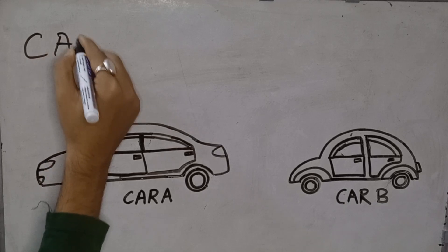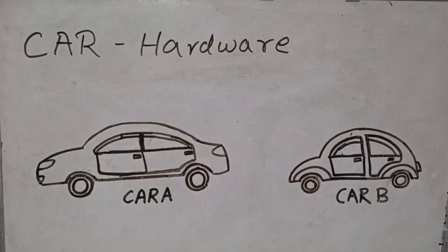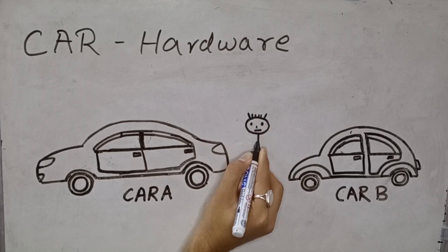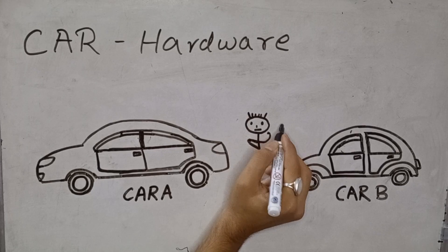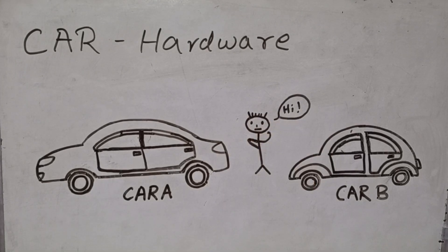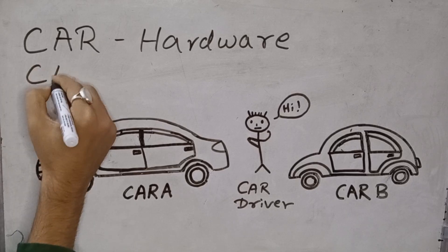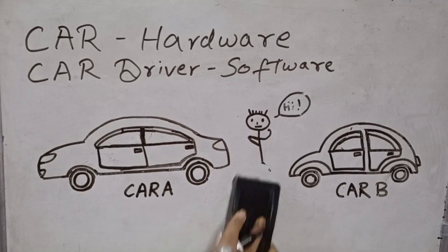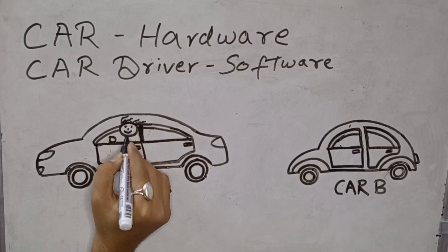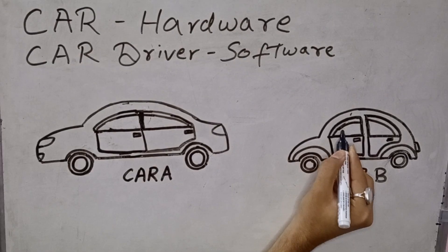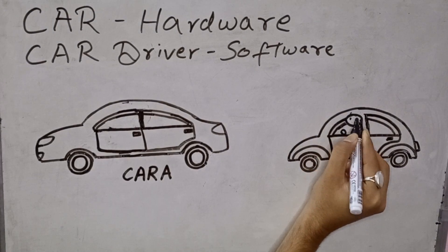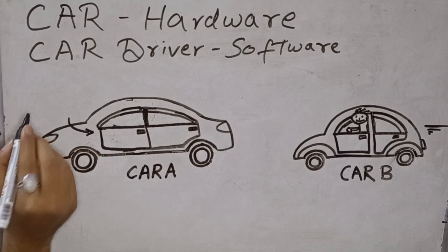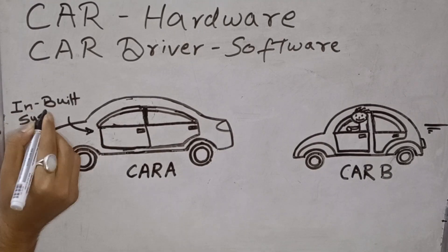Let us discuss an analogy. Suppose we have two different models of cars at our disposal — car A and car B. These cars represent hardware. Now, let us get a car driver to drive these machines. Consider the car driver as software. A trained driver can operate different cars, aka hardware, whether it's a sedan, SUV, or truck, as long as they know how to drive.